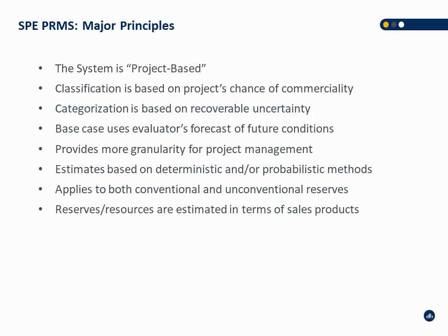Deterministic and/or probabilistic methods apply to conventional and unconventional resources, and reserves and resources are estimated in terms of sales products. Because they're so tied to commerciality and economics, reserves can only be disclosed at a certain sales point. You're going to have a reference point for each product or sales, and you can only disclose what the company actually sells. You're not allowed to disclose anything that does not get sold — it has to be at sales price.